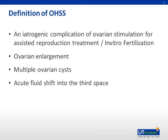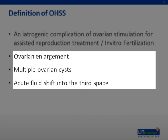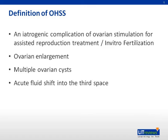OHSS usually develops several days after oocyte retrieval or assisted ovulation. This syndrome is characterized by ovarian enlargement due to multiple ovarian cysts and an acute fluid shift into the extravascular space. Results include ascites, hemoconcentration, hypovolemia, and electrolyte imbalances.